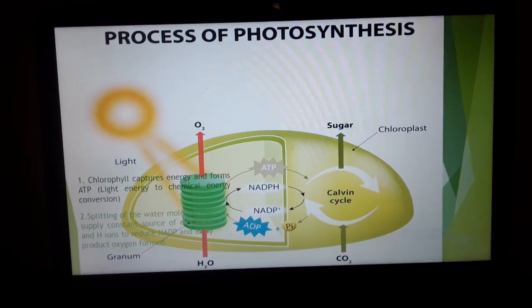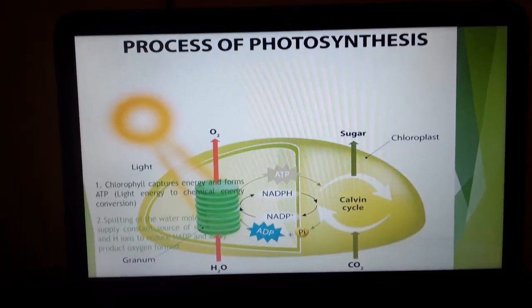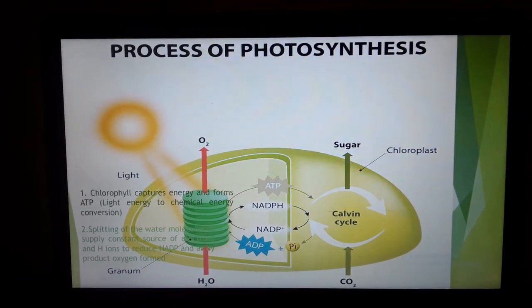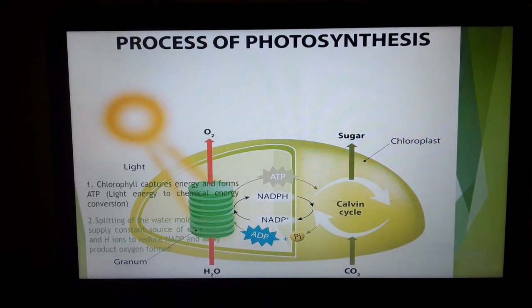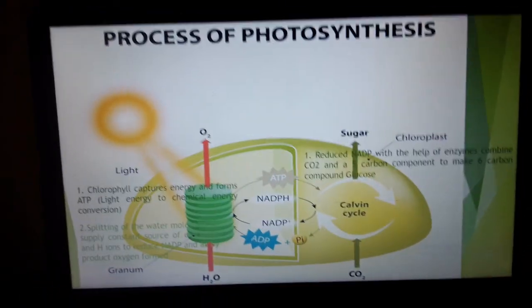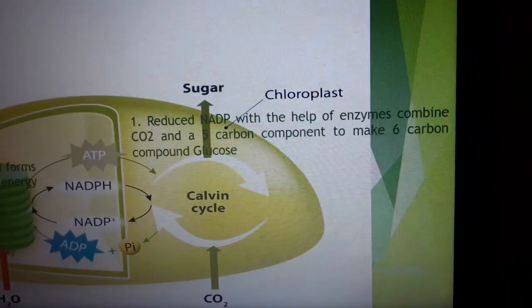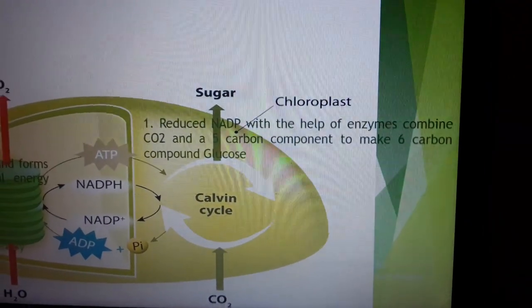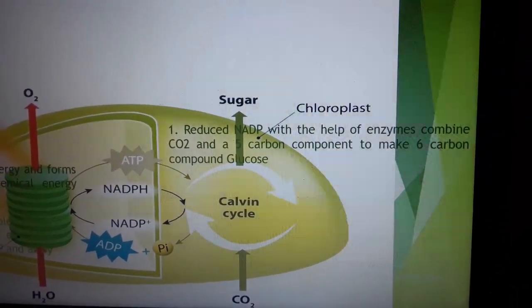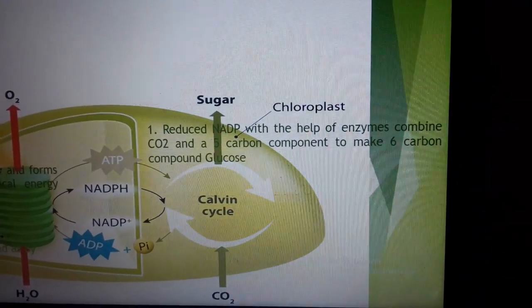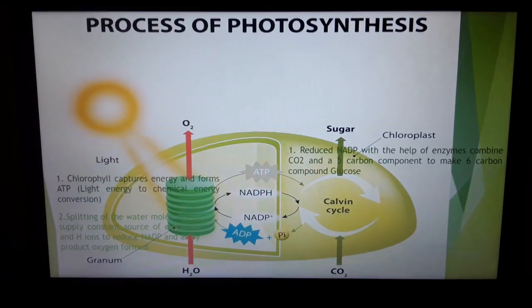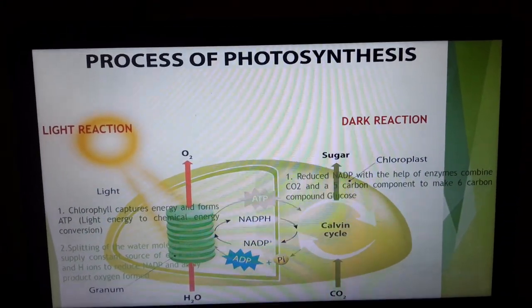Now, this reduced NADP, NADPH and ATP needed for the next half named as the Kelvin cycle. It is performed in the stroma, the matrix part, not in the grana. So, this is the third point. The reduced NADP means the first point of the next part. Reduced NADP with the help of enzymes. Combined CO2 and a 5-carbon component to make 6-carbon compound glucose. This is the dark reaction which does not need the sunlight directly as already it is getting the ATP. This is the light reaction left side. This is the dark reaction.